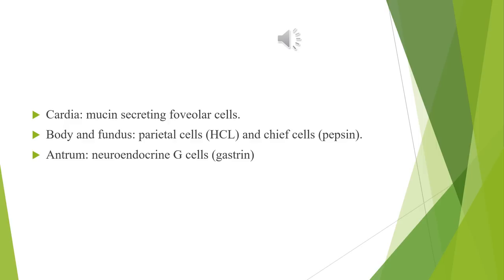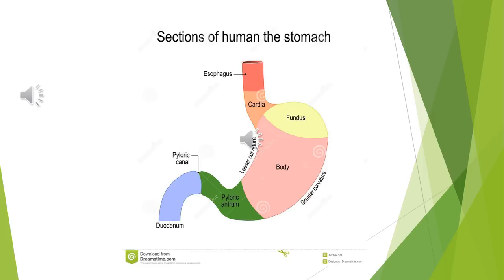G cells can be difficult to find on H&E stain, so immunohistochemical stains are used to highlight them. The stomach wall has four layers: the mucosa, the muscularis mucosa separating mucosa from submucosa, the submucosa, the muscularis propria, and then the adventitia and serosa. These four layers are constant throughout the stomach, though cellular contents differ by region.